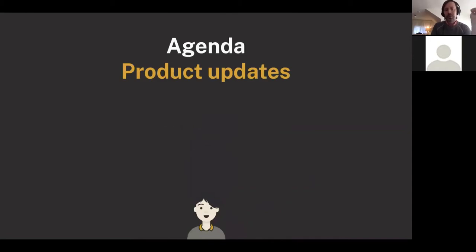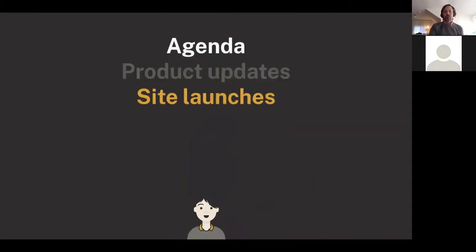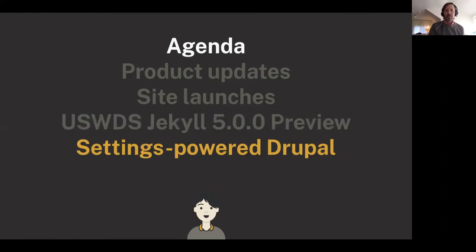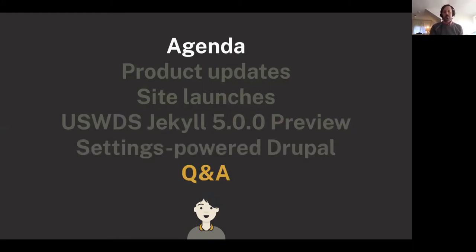On the agenda today: some product updates, a few nice new site launches, and I'll be showing you a bit about the USWDS Jekyll 5.0 theme — the newest version of USWDS Jekyll, which uses Design System 2. I'll be giving a preview of that, and then we'll be talking to Brian Seek about settings-powered Drupal. And at the end, we'll have time for questions and answers.